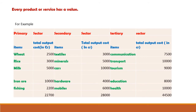Now we come to the secondary sector. Again I have taken five items to make calculation easy. Textile generates 3000 crores of rupees in a year. Minerals processed and sold in the market generate 5000 crores. Cars generate 10,000 crores. Hardware like computers and accessories generates 4000 crores, and mobile phones generate 6000 crores of rupees. So the total output of the secondary sector comes to 28,000 crores of rupees.